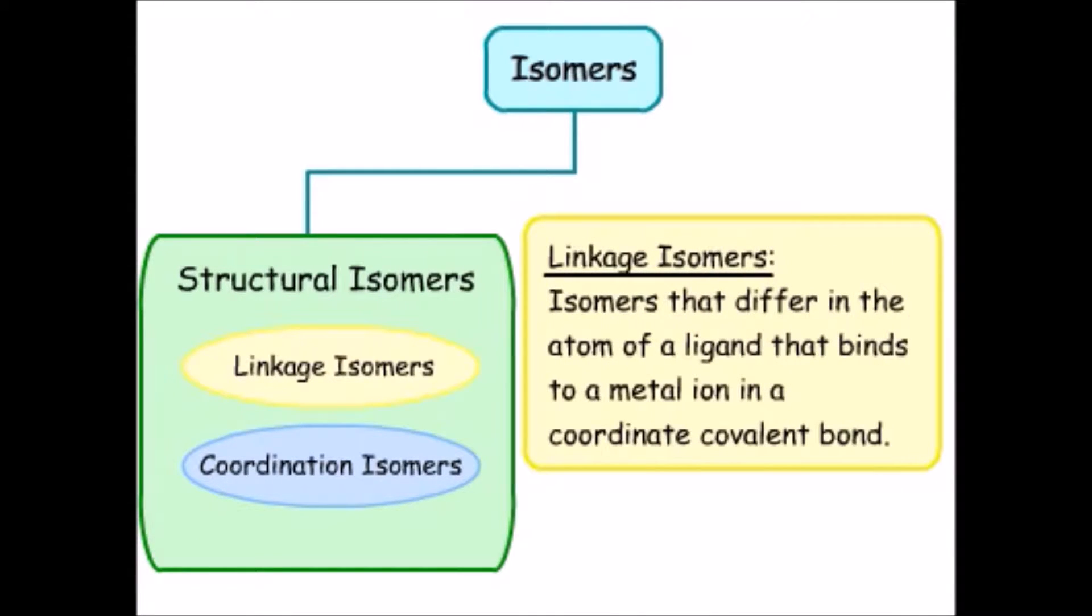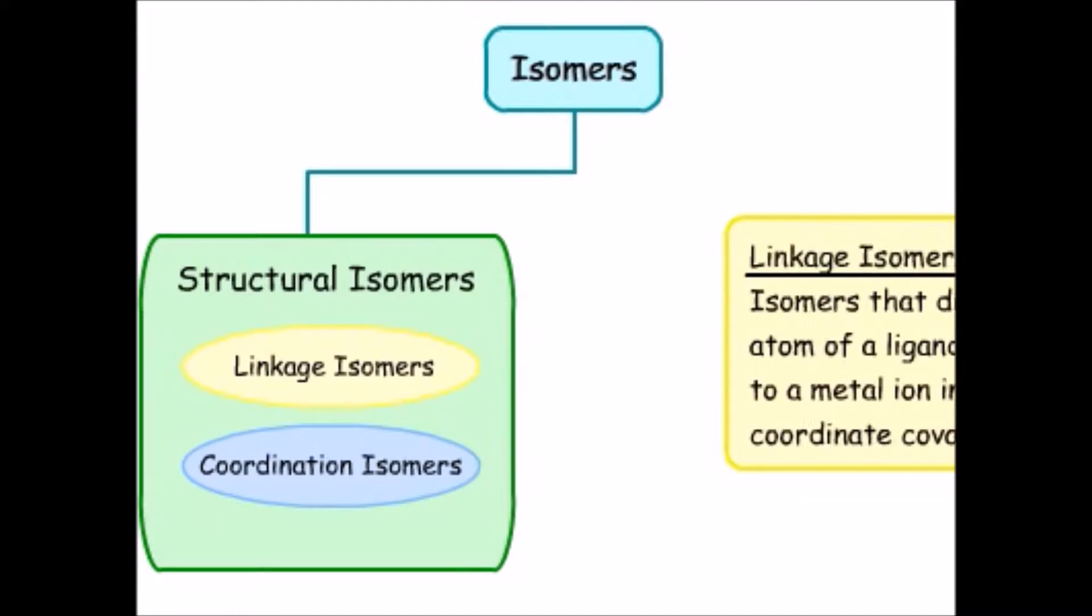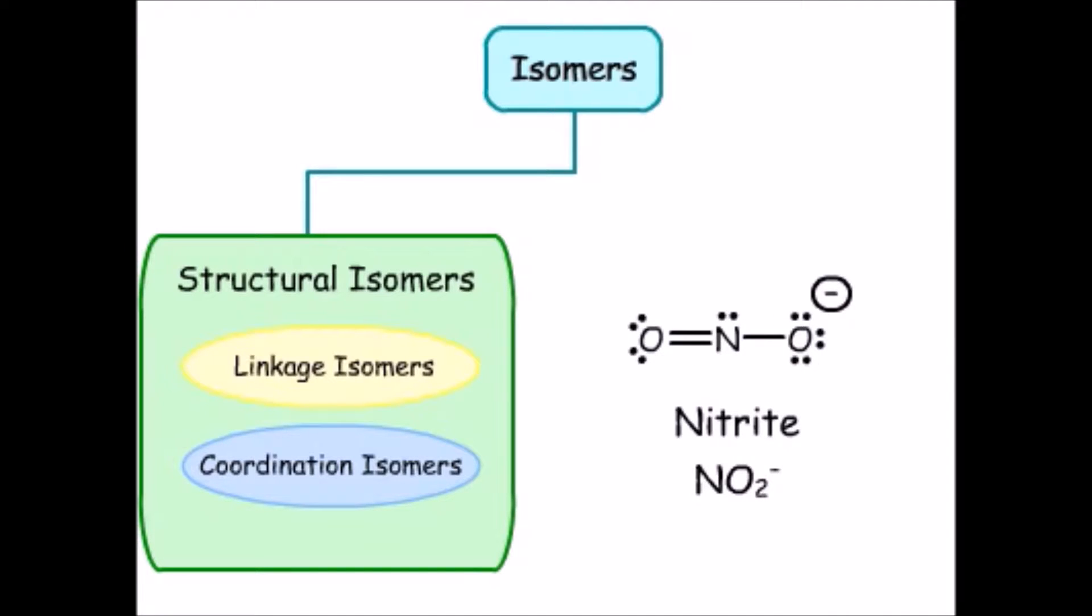Linkage isomers are isomers that differ in the atom of a ligand that binds it to a metal ion in a coordinate covalent bond. Ligands which have two atoms with a lone pair of electrons can form linkage isomers, since either atom can donate the electrons for the coordinate covalent bond.